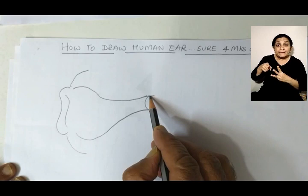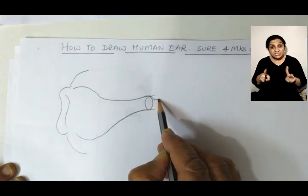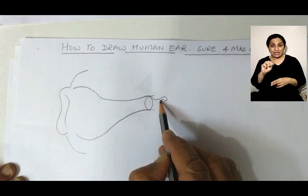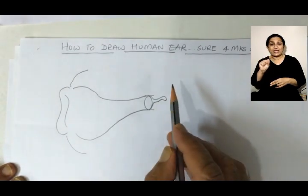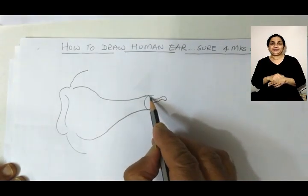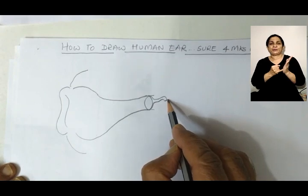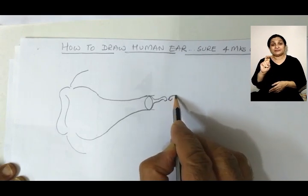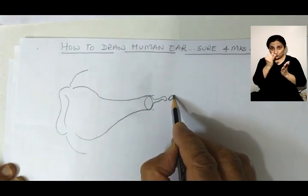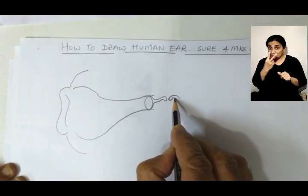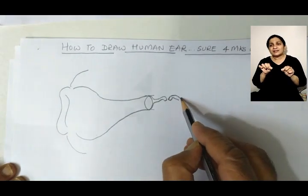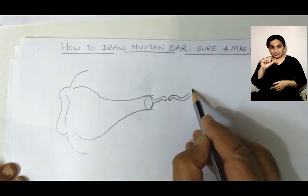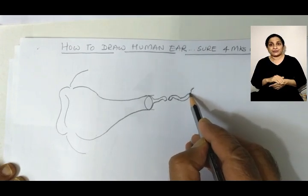The middle ear consists of three different bones. The first bone is called the malleus, just in the form of a hammer — do a little bit of bend here like this. The second bone is called the incus — just draw it in this shape, opposite to the malleus, with a little bit of bend here.